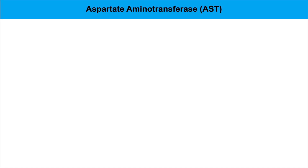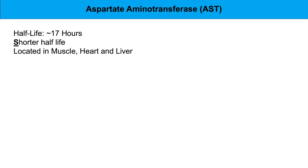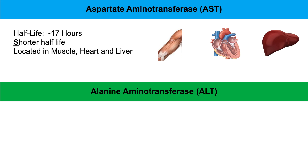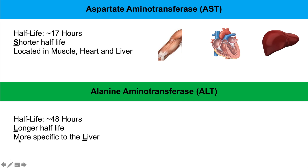Aspartate aminotransferase has a half-life of 17 hours — a shorter half-life than alanine aminotransferase. AST is located in the muscle, heart, and liver. Alanine aminotransferase has a half-life of 48 hours — a longer half-life. A helpful mnemonic: L for longer and S for shorter. ALT is also more specific to the liver — again, L for liver.